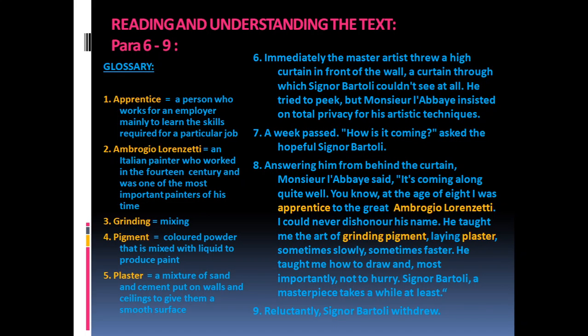Glossary: Apprentice — a person who works for an employer mainly to learn the skills required for a particular job. Ambrigor Lorenzetti — an Italian painter who worked in the 14th century and was one of the most important painters of his time. Grinding — means mixing. Pigment — colored powder that is mixed with liquid to produce paint. Plaster — a mixture of sand and cement put on walls and ceilings to give them a smooth surface.